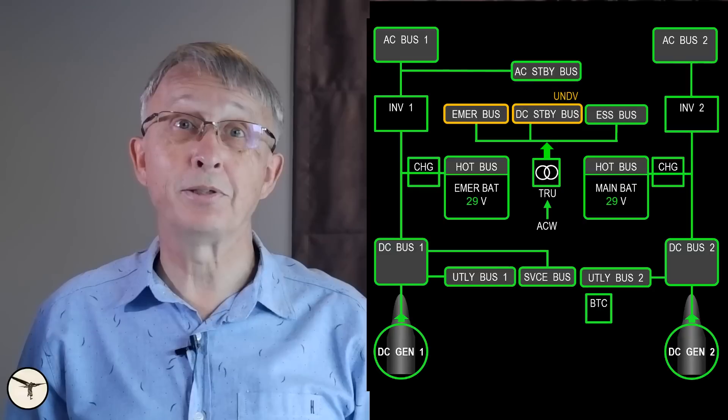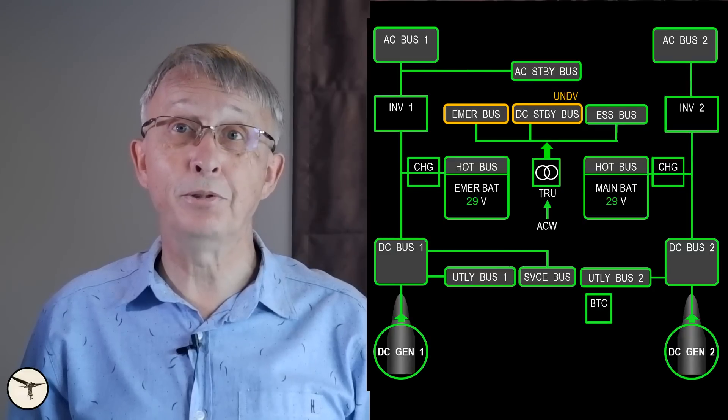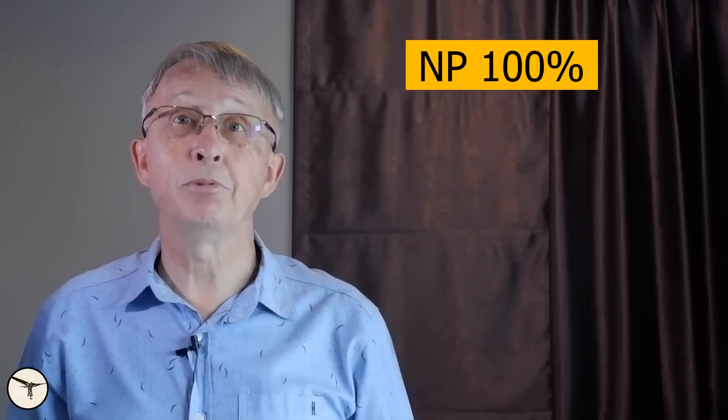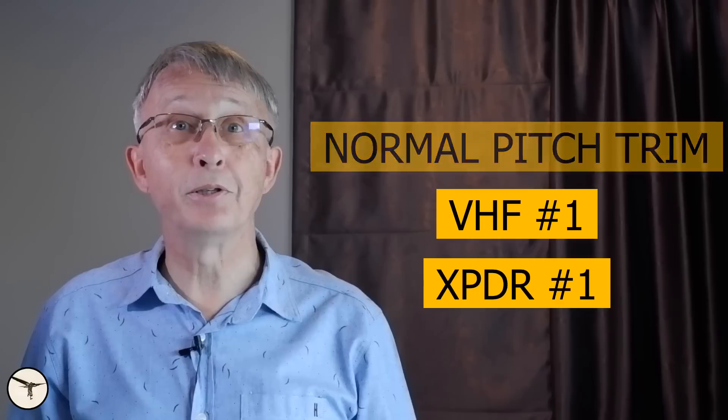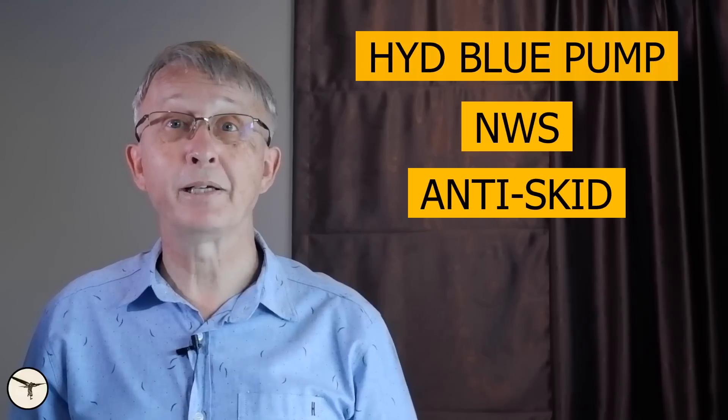Loss of the emergency bus also resulted in loss of propeller interface unit, which caused propeller RPM to increase to 100%, and loss of normal pitch trim, VHF1, transponder number one, hydraulic blue pump control, nose steering, and brake anti-skid.